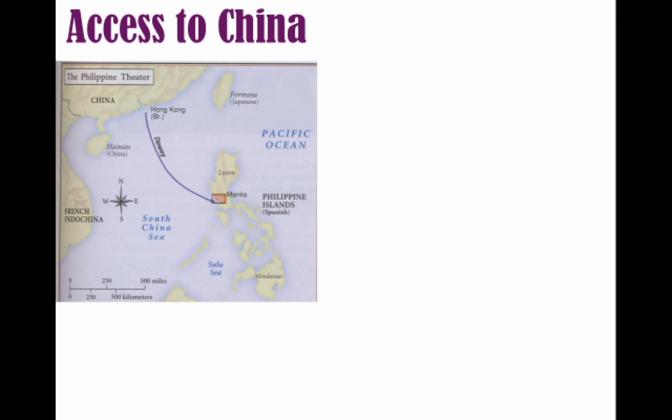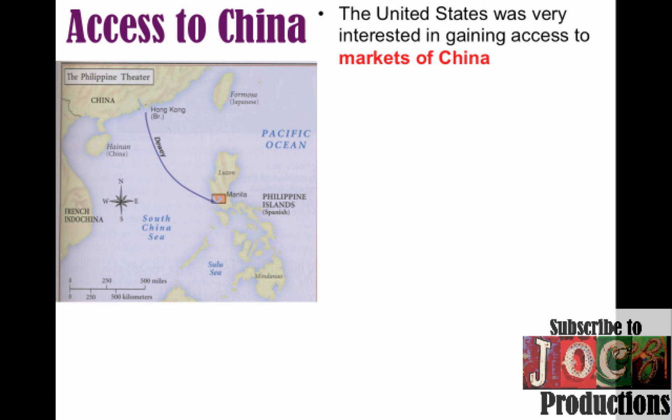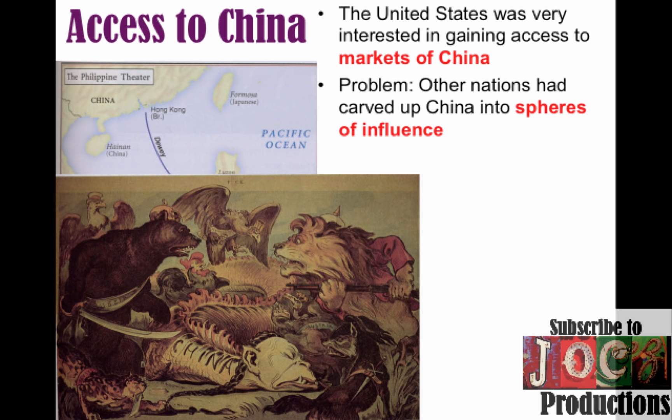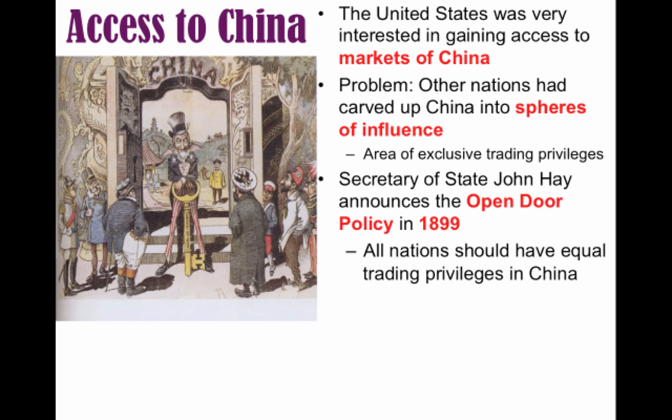One of the reasons the U.S. was so interested in the Philippines was its close proximity to China. The U.S. had long been interested in gaining access to Chinese markets. The problem was that other nations had carved up China into spheres of influence — areas of exclusive trading privileges where no other nation was allowed. So the U.S. response, through Secretary of State John Hay, was to announce the Open Door Policy in 1899, declaring that all nations should have equal trading privileges in China.